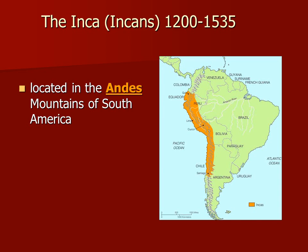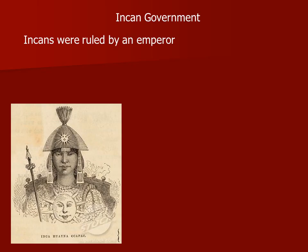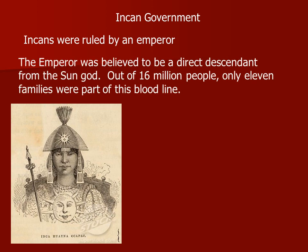The last group we'll look at are the Incas, who came to be at almost the same time as the Aztecs but in a different part of the world — South America, specifically in the Andes Mountains. They are far from Mesoamerica and have some very different ways of looking at the world. The Inca were also ruled by an emperor, believed to be the direct descendant of a sun god. Out of an estimated 16 million people, only 11 families were believed to carry that bloodline, so very few people could qualify as emperor.